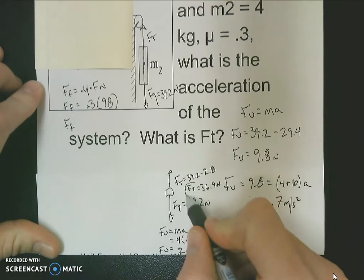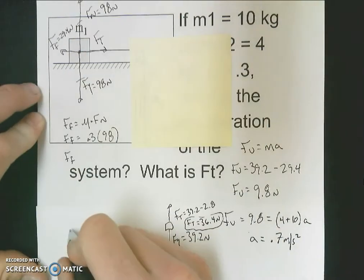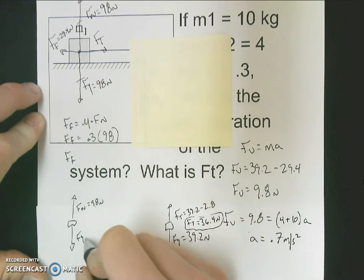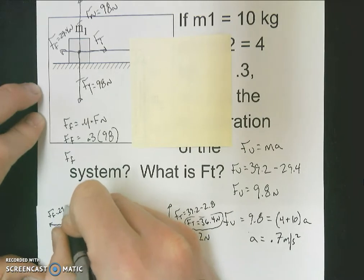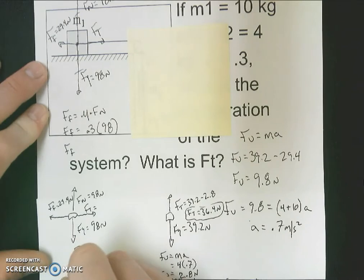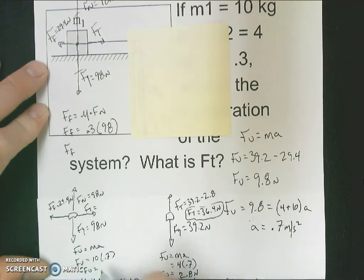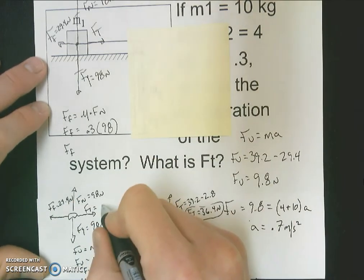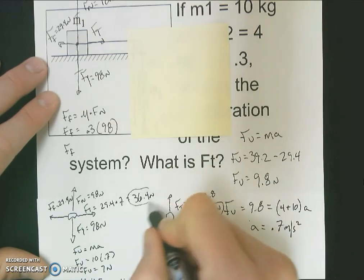We can also solve for our force of tension using the mass on the table instead. Disregarding the hanging mass and just using the mass on the table: force normal and force of gravity are both 98 newtons; force of friction is 29.4 newtons. Using F = ma for this mass: 10 kilograms times 0.7 gives an unbalanced force of 7 newtons, which means my force of tension is 7 newtons larger than my force of friction. So 29.4 plus 7 gives 36.4 newtons — the same force of tension found before.